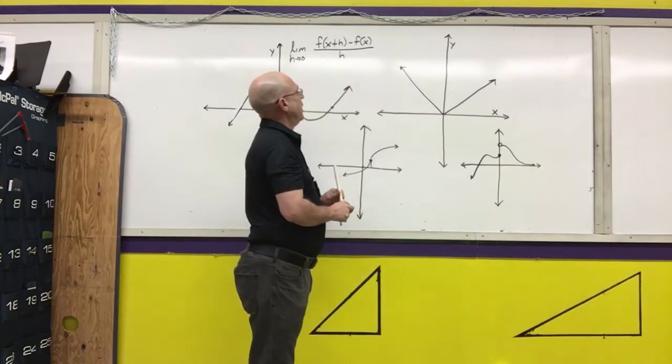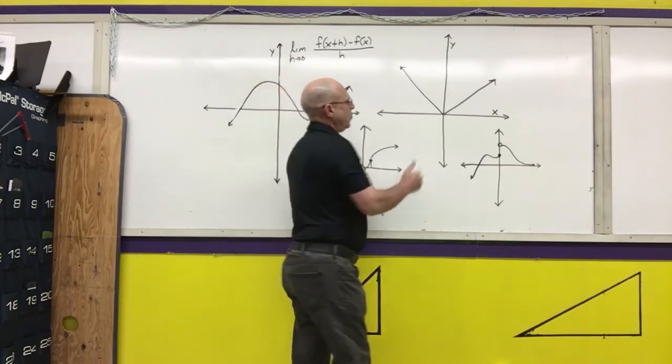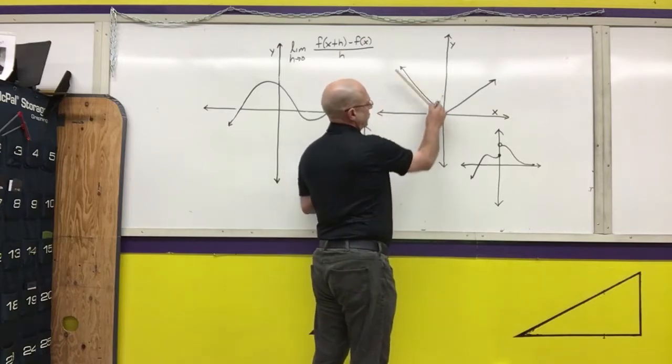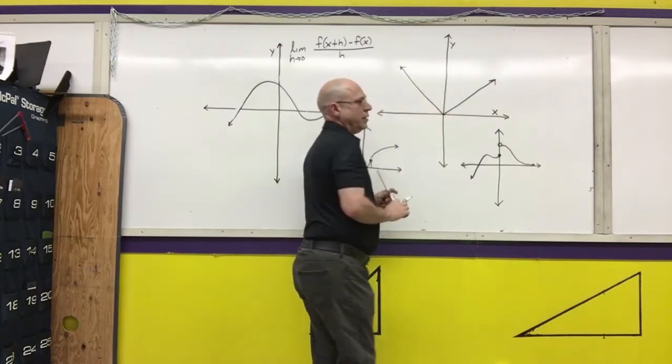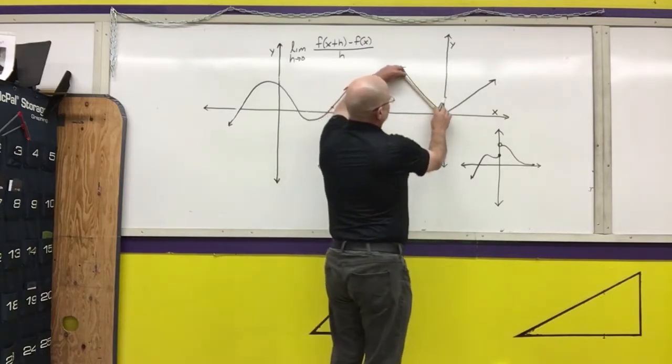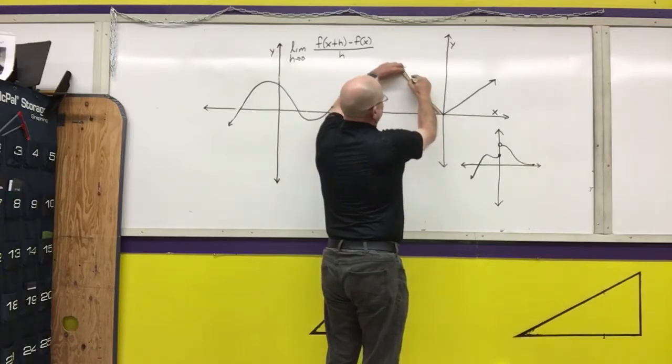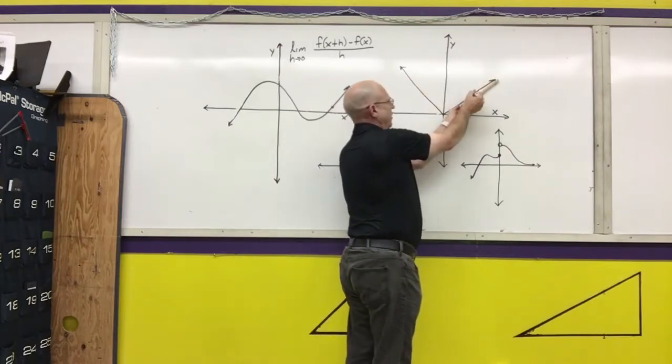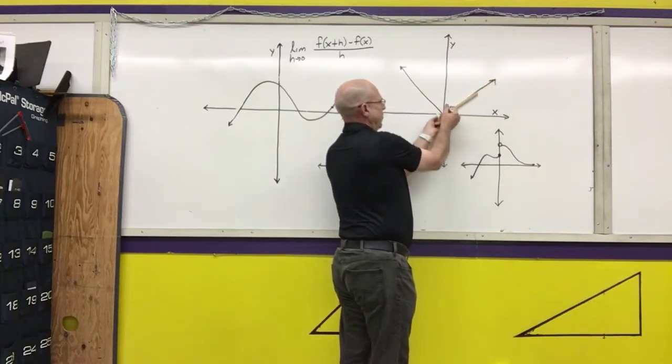A final type of function that is not differentiable is one that has a sharp corner. The absolute value function has a sharp corner at zero. We can see that if I'm coming in anywhere along the graph on this side, I have a slope of negative one. If I come in from anywhere on this side, I have a slope of positive one.